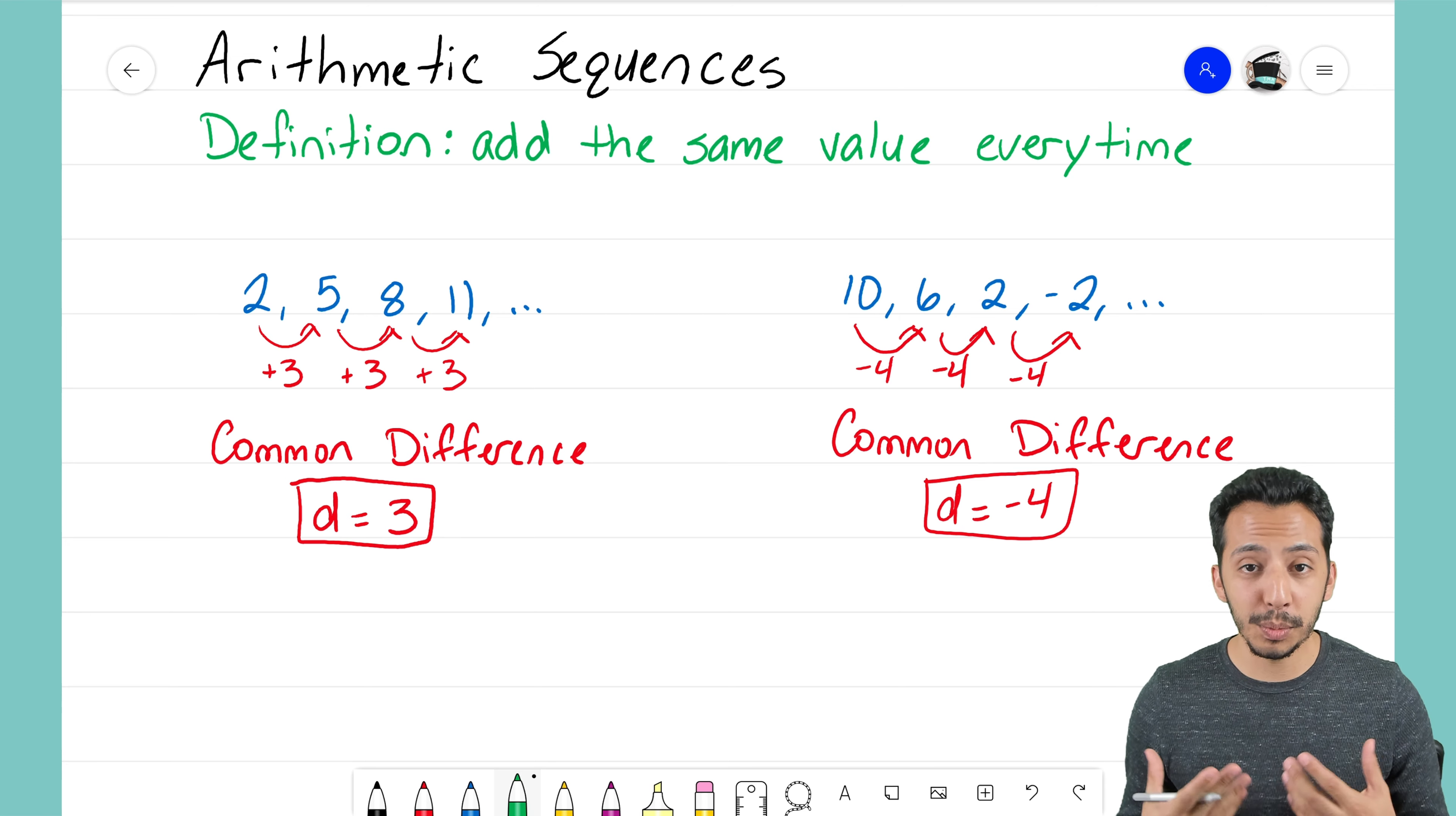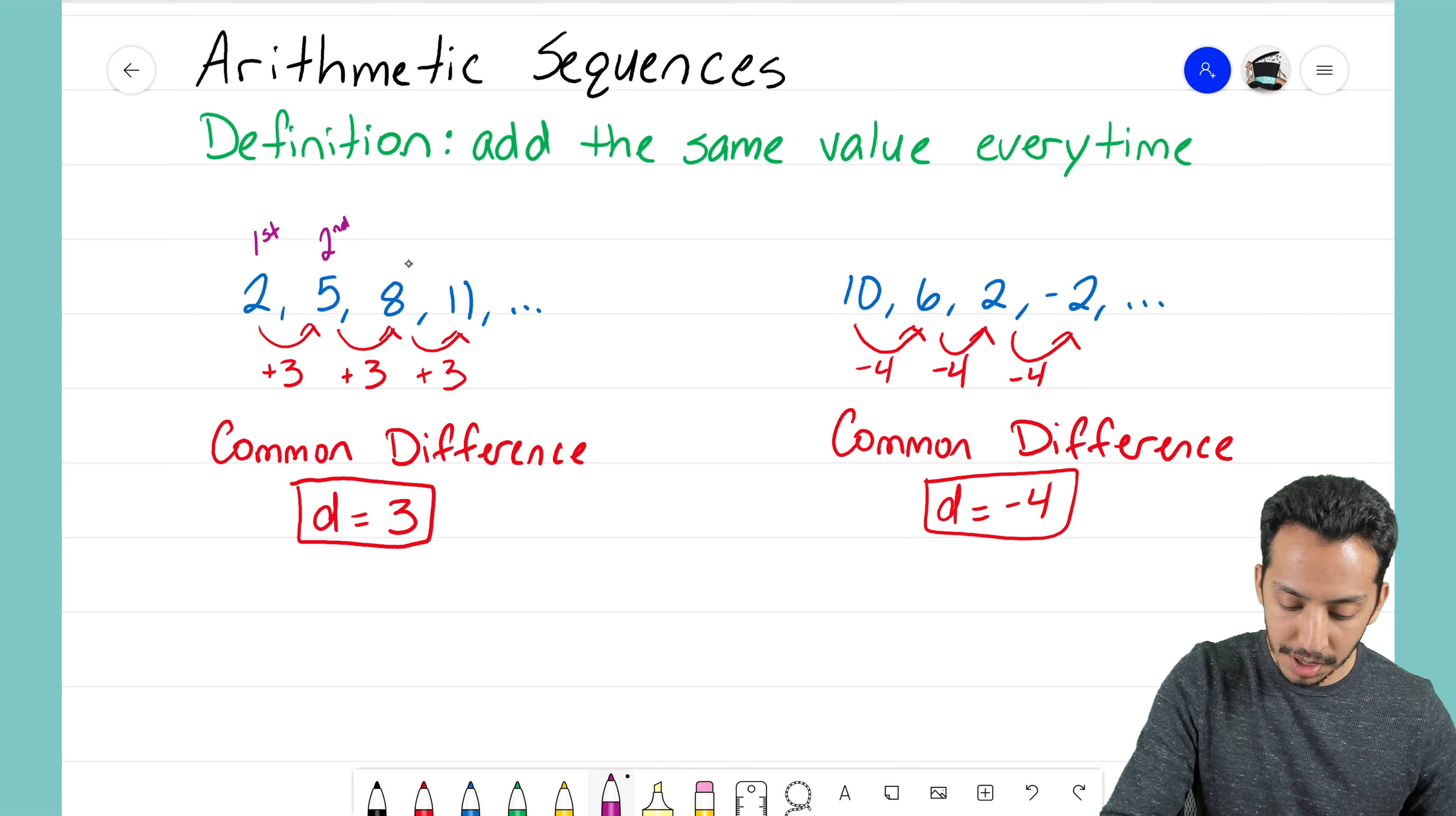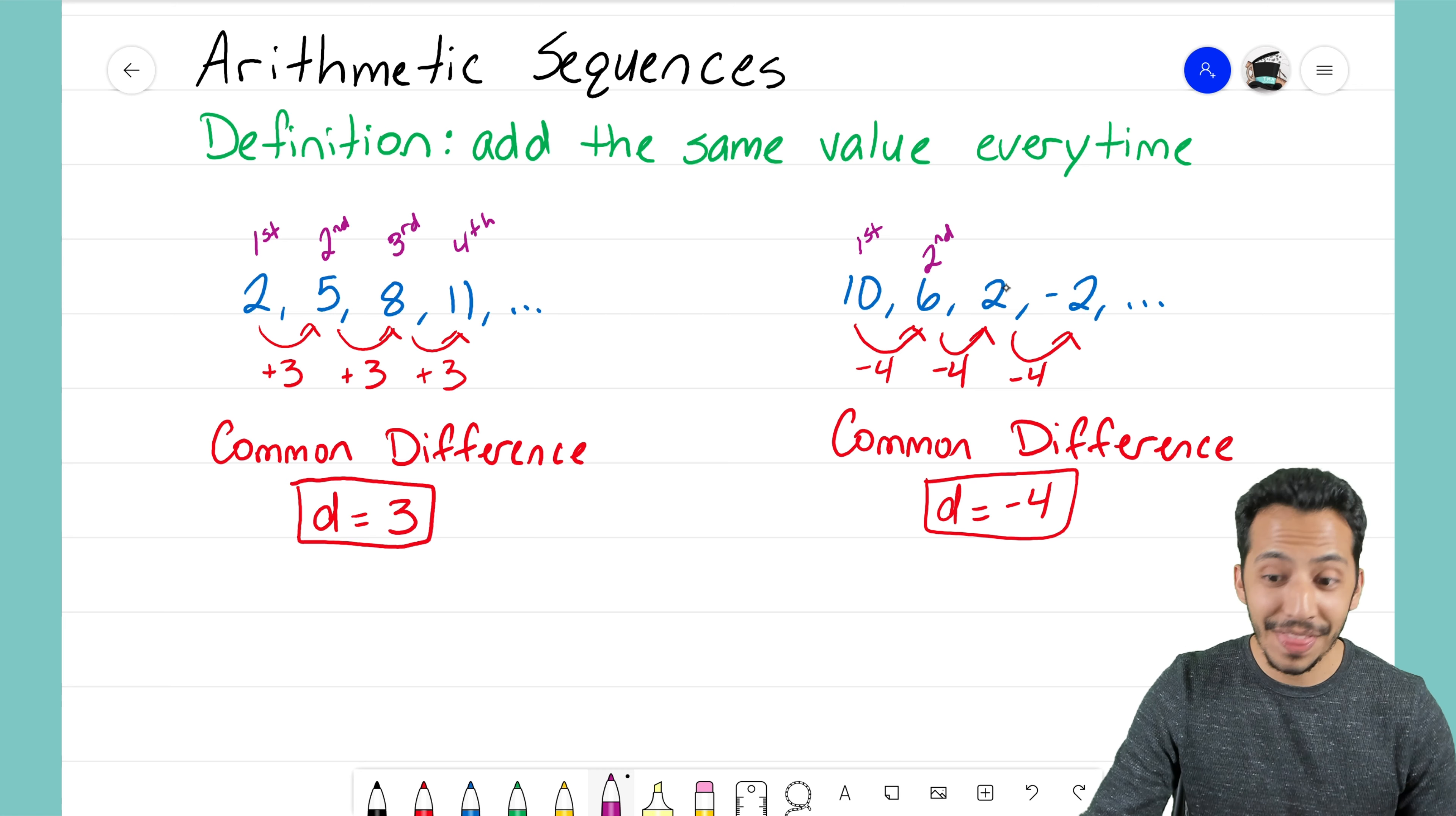When we're talking about sequences, when I'm looking at these two sequences from the previous video, hopefully we can recognize that in this left sequence the two is the first term, the five is the second term, the eight was our third term, and the eleven here was our fourth term. Same thing happened on the right sequence here. We saw that ten here was the first term, that six was the second term, that two was the third term, and the negative two was the fourth term.